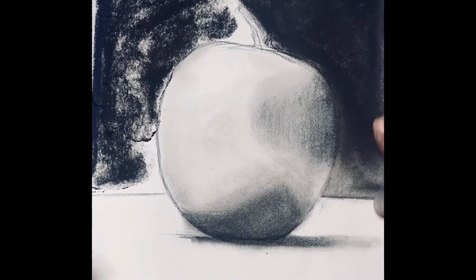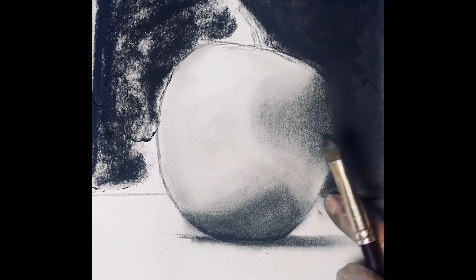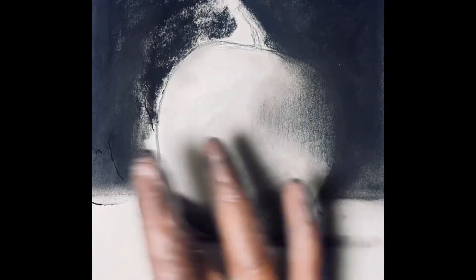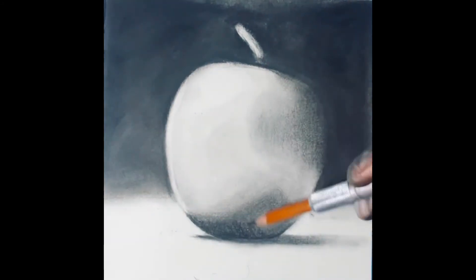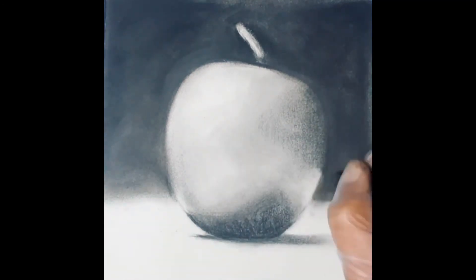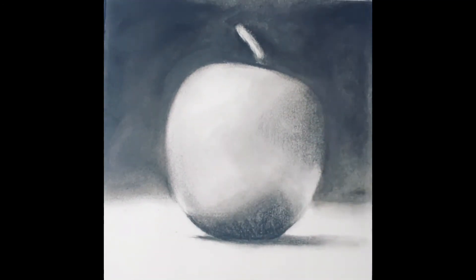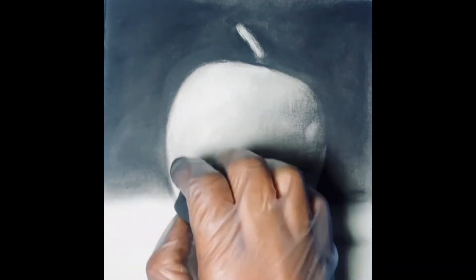I used thick charcoal to shade in the background. I could have left it white, but I preferred to add a dark background to my charcoal drawings because it defines the form, creates contrast, and blends the outline of the apple, making the outline no longer visible.